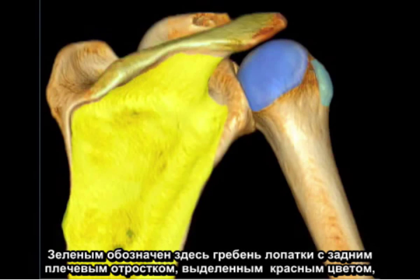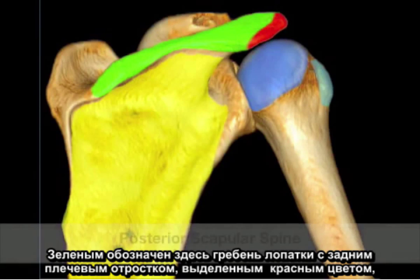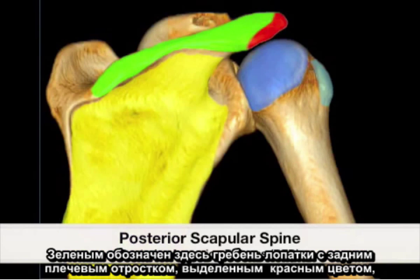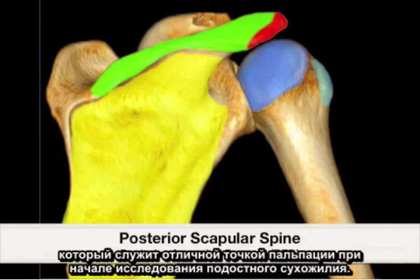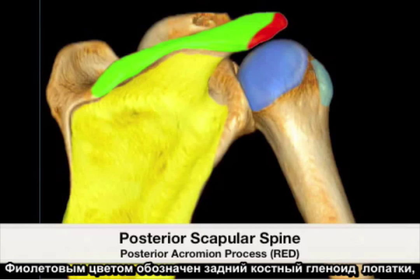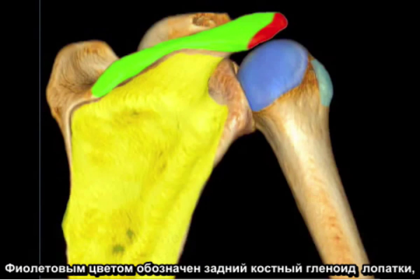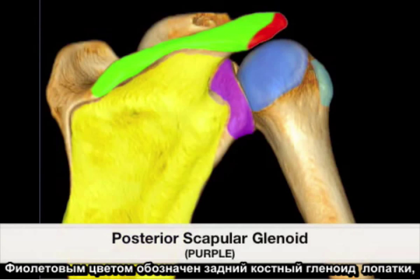Highlighted in green is the spine of the scapula, with a red posterior acromion process, which serves as a great palpation point to begin the examination of the infraspinatus tendon. Highlighted in purple is the posterior bony glenoid of the scapula.